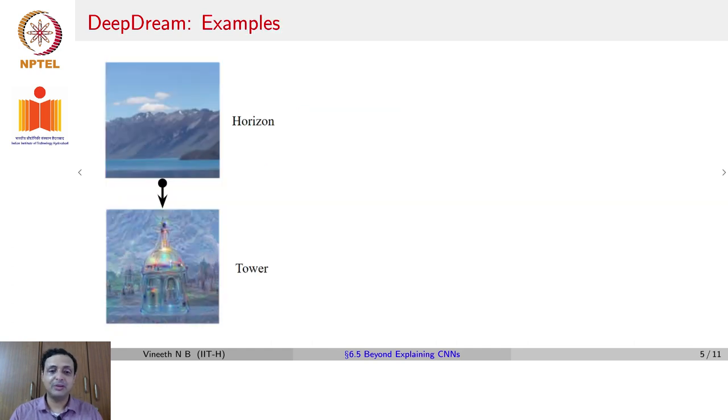A few more examples of DeepDream. Given an image of a horizon, you can actually convert it to one of a tower, you can actually see that this is the same image taken, but you keep on juxtaposing a tower filter on it, and you end up getting a construction such as this.